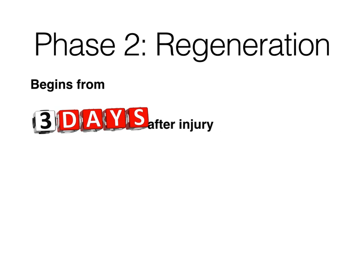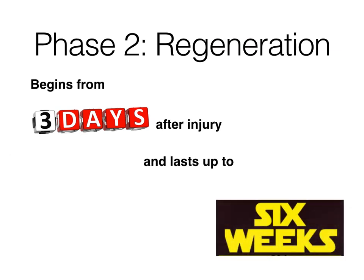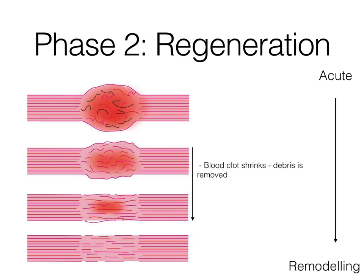Phase 2 is regeneration. Regeneration begins from 72 hours — or three days — after the injury and lasts up to six weeks. This phase is characterised by the shrinking of the blood clot, in which debris is removed from the area. The blood clot and dead and dying tissue are removed, and new fibres then start to form along with scar tissue. So during the regeneration phase — lasting from three days up to six weeks — scar tissue forms, new fibres develop, and debris is removed, moving towards remodelling.